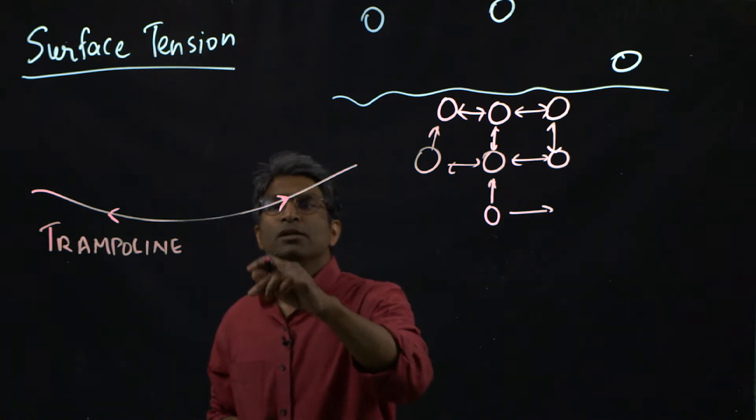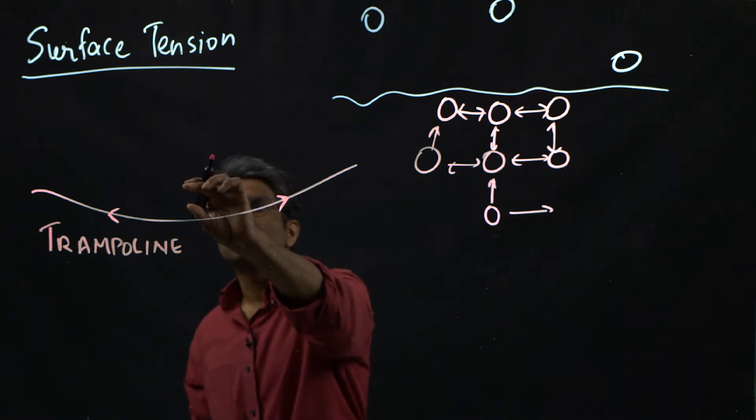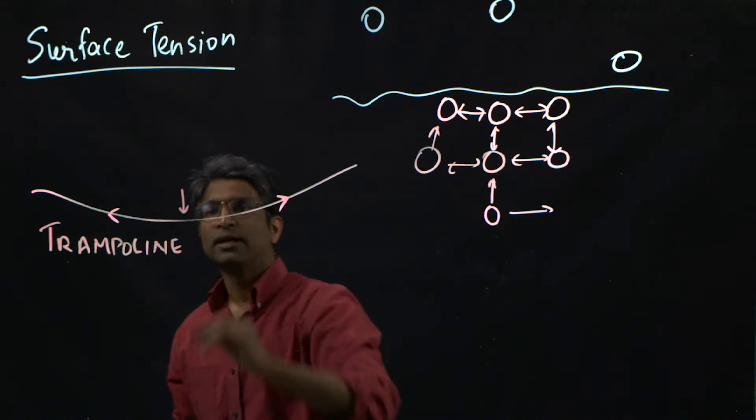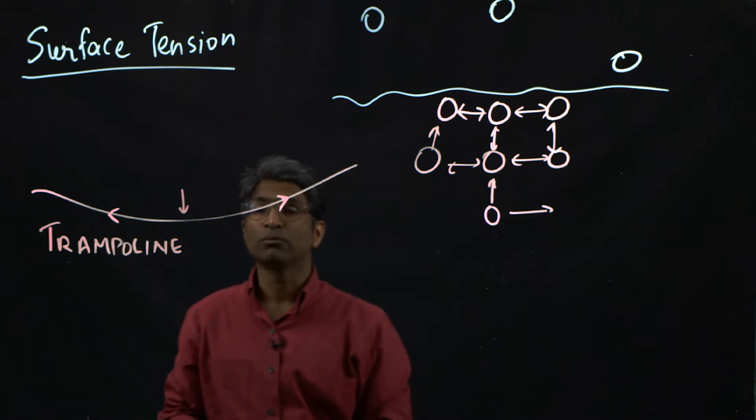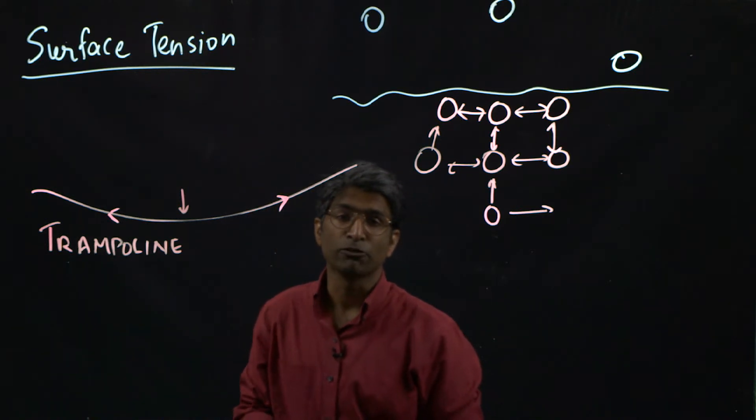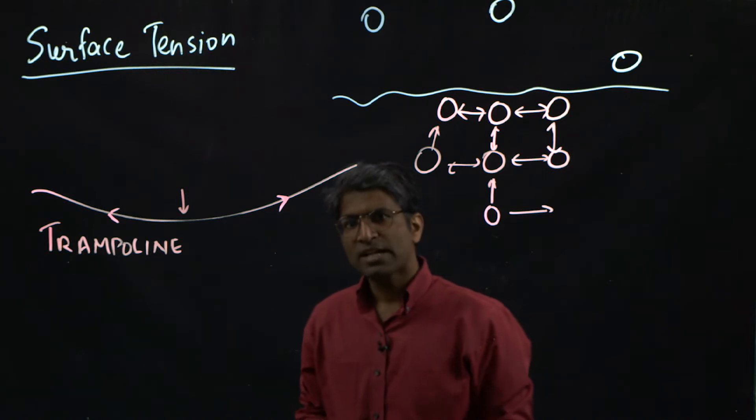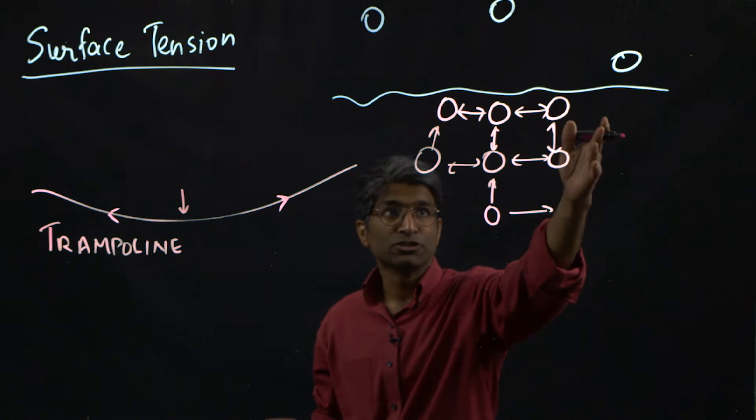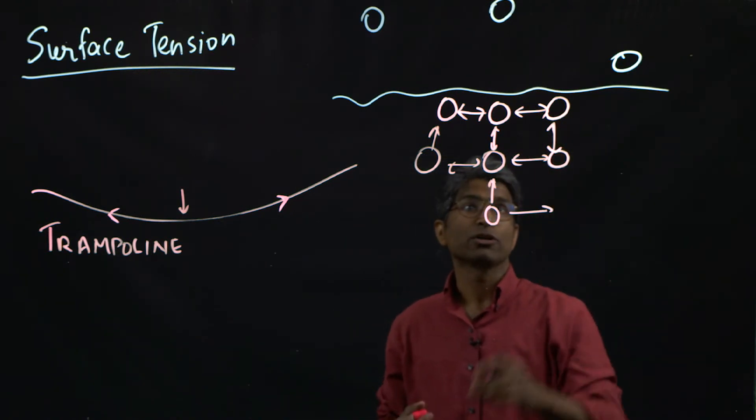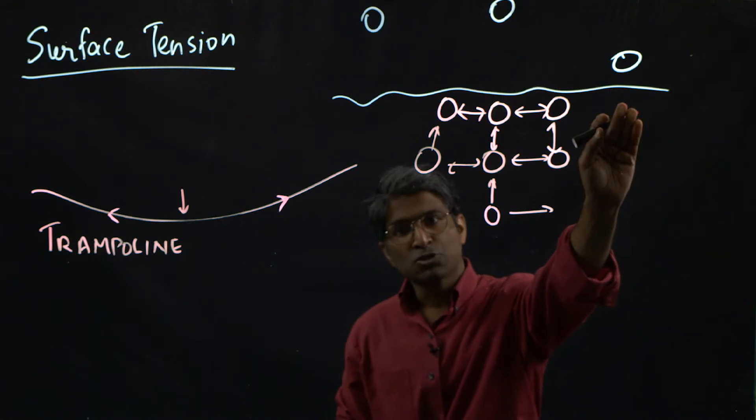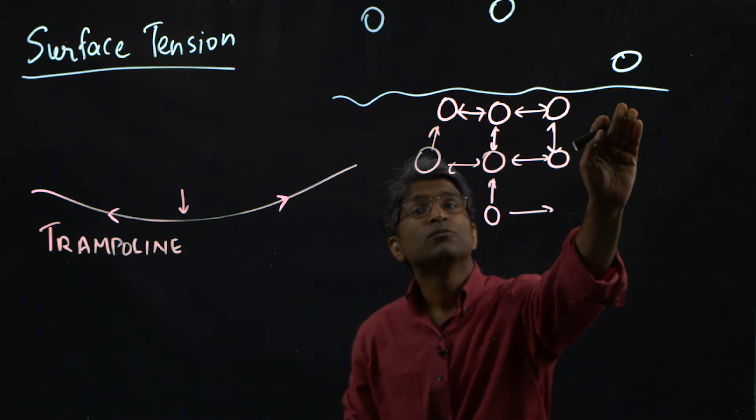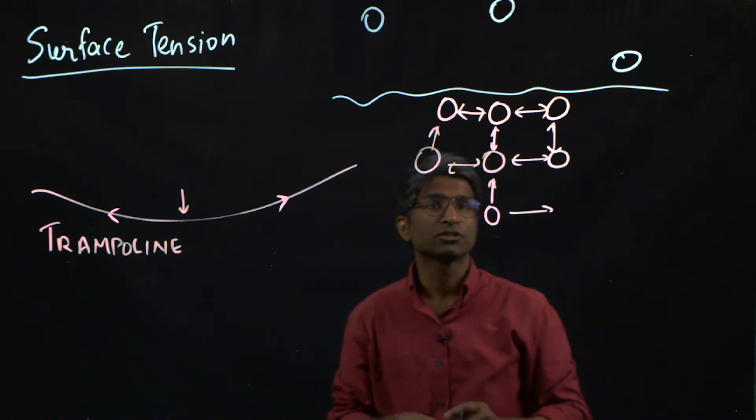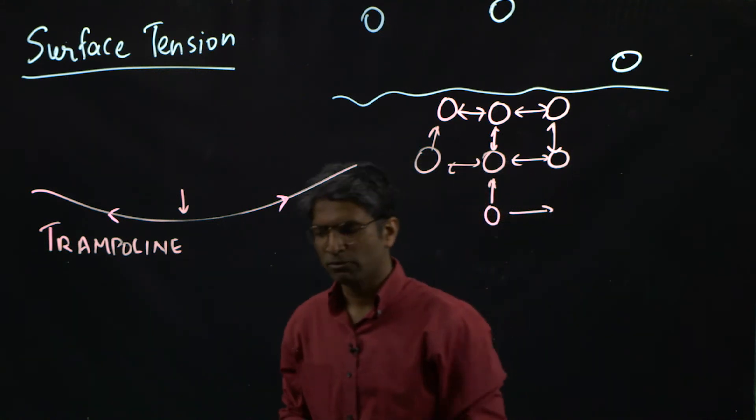So anytime there is a solid object on this interface, so long as the tensile force can balance the extra weight that you might impose, you will not sink. You'll stay on a float on the surface. And that's exactly the reason why some insects are able to walk on water because of this idea of an excess energy or a force at the surface. And so long as the insect can distribute its weight over a large enough area so that the surface force can balance it, the insect will float.